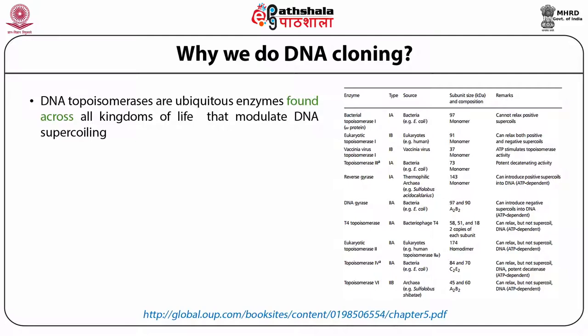Topoisomerase 6 is type 2B from archaea, with two subunits each of 46, 45, and 60 amino acids. It can relax supercoils but cannot induce DNA supercoiling. As we can see, topoisomerases are present across kingdoms but have different functions, different sizes, and play important roles in underwinding as well as overwinding DNA, altering the DNA supercoiling status of the cell.